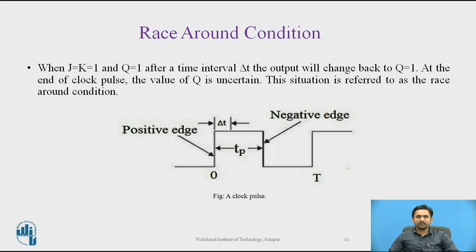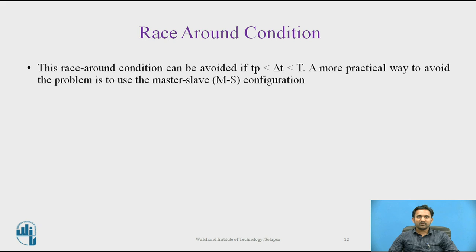For JK flip-flop, if J equals K equals 1 for a long period of time, the Q output will toggle as long as the clock is high, making the output unstable or uncertain — this is the race around condition. This problem can be avoided by ensuring the clock input is at logic 1 only for a very short time. If the clock high time is less than the propagation delay of the flip-flop, then racing can be avoided. This race around condition requires T_p less than delta-t, which should be less than total time T.